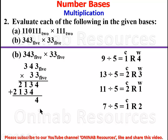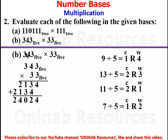Continuing: 1 plus 3 gives 4, plus the carried 1 gives 5; 5 divided by 5 gives 1 remainder 0, write 0 carry 1. That 1 plus 2 gives 3, plus 1 gives 4. The remaining 2 has nothing to add to, so we bring it down. The result of 343 base five multiplied by 33 base five is 24024 base five.